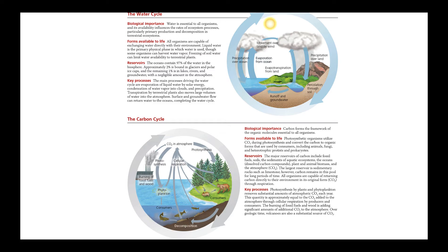The water cycle involves both the biotic and abiotic components of an ecosystem. Water is needed by organisms and will be taken up by those organisms, so they'll be involved in the biotic components of this cycle. Things such as clouds, the ocean, and the water itself will be the abiotic components of that ecosystem. Moving on to the carbon cycle, it's a little more complicated.